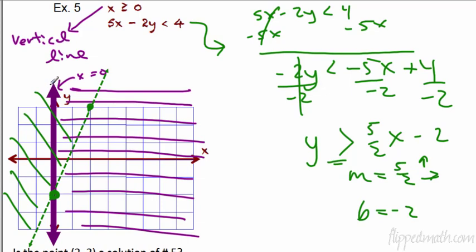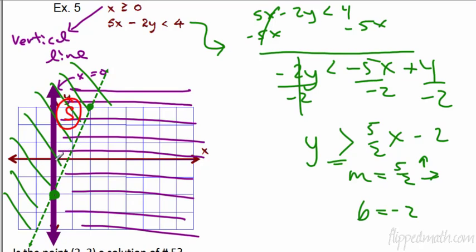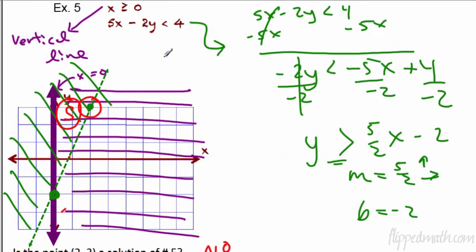This is the part that's double-shaded — the solution set. The question: is the point (2, 3) a solution of number five? Going to (2, 3) — that's this point. It's in the purple shaded region, so good there. But on the green, it's on the dotted line, which means not part of the solution — it's not equal to. So the answer is no.